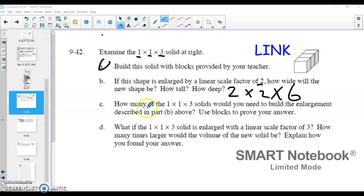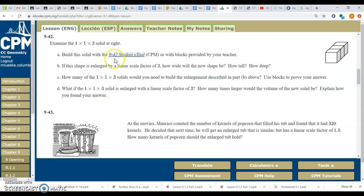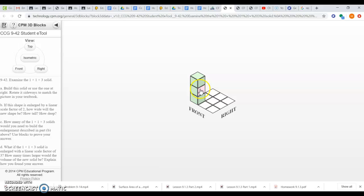So now they're going to ask us how many 1x1x3 solids would you need to build this 2x2x6 solid? All right, and I'm going to try to do that using the e-tool to try to show this. And so I'll go to the e-tool here again, 9-42 student e-tool. This is our original shape. It is this 1x1x3 shape, and now we need to make it 2x2x6.